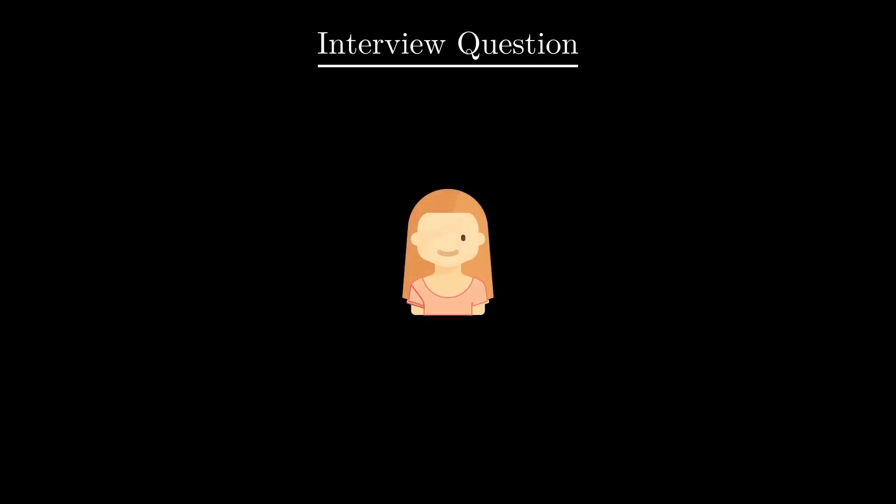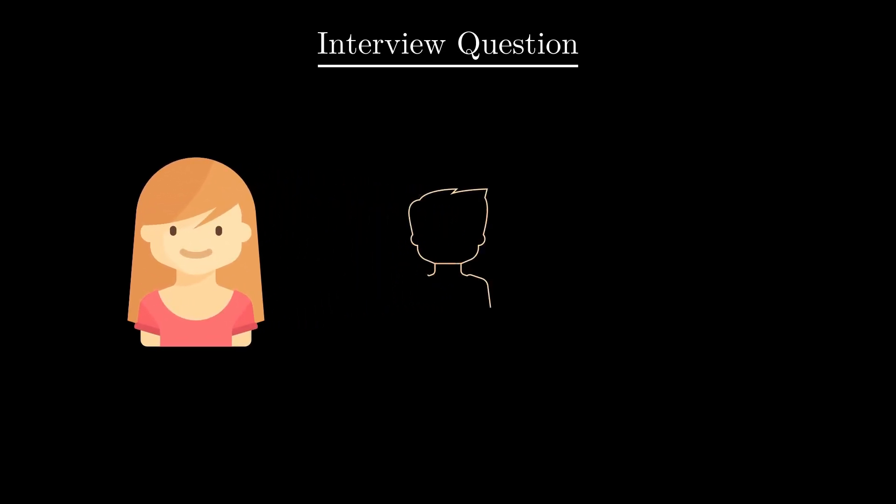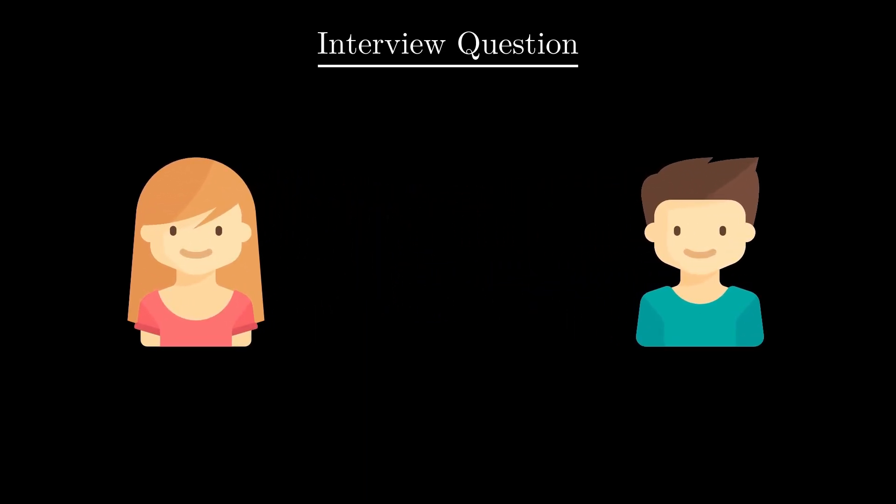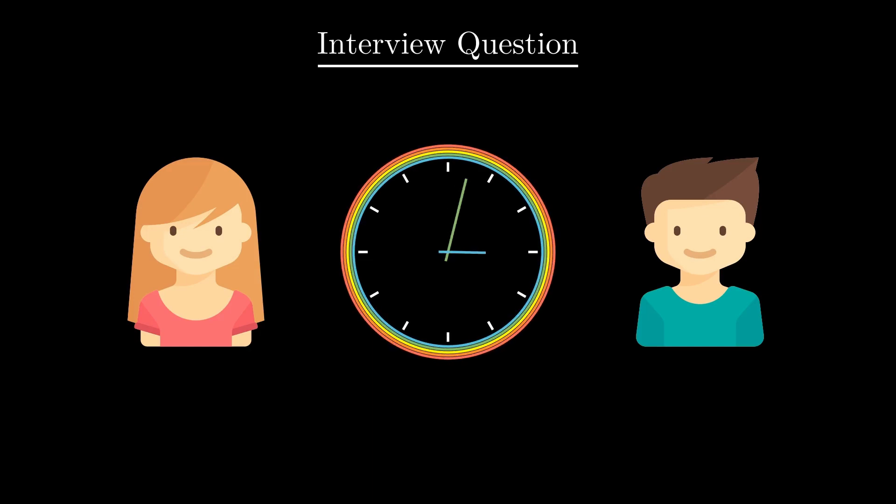Two friends, Alice and Bob, decide to meet in the library between 3 to 4 pm. If the library closes at 4 pm and given each of them arrive uniformly in this time interval and wait for at most 10 minutes, what is the probability that they actually meet?